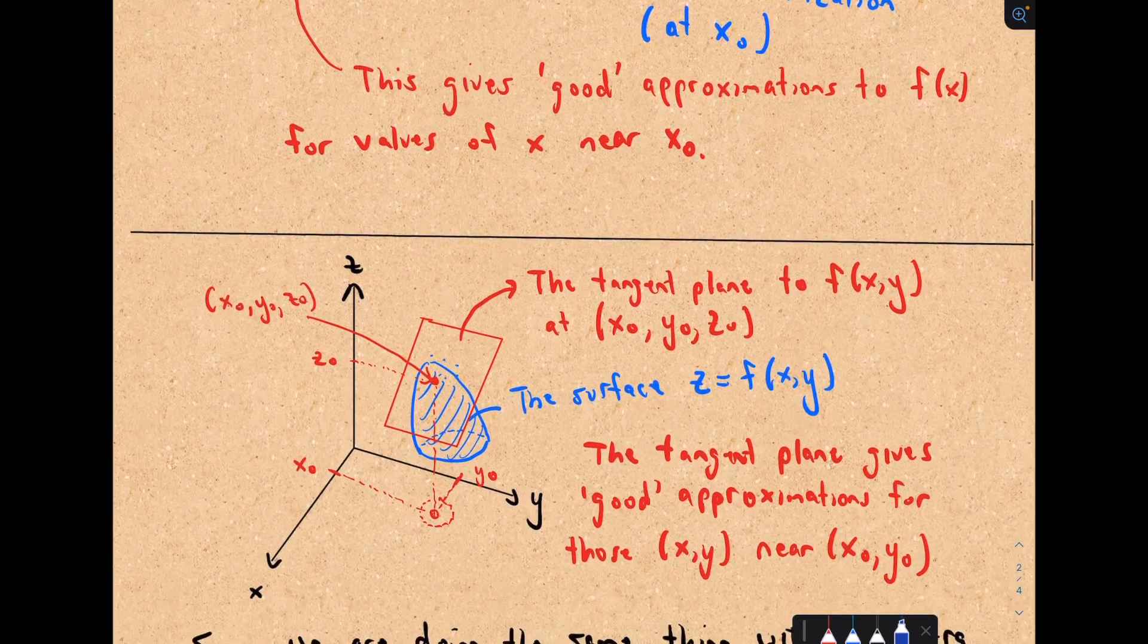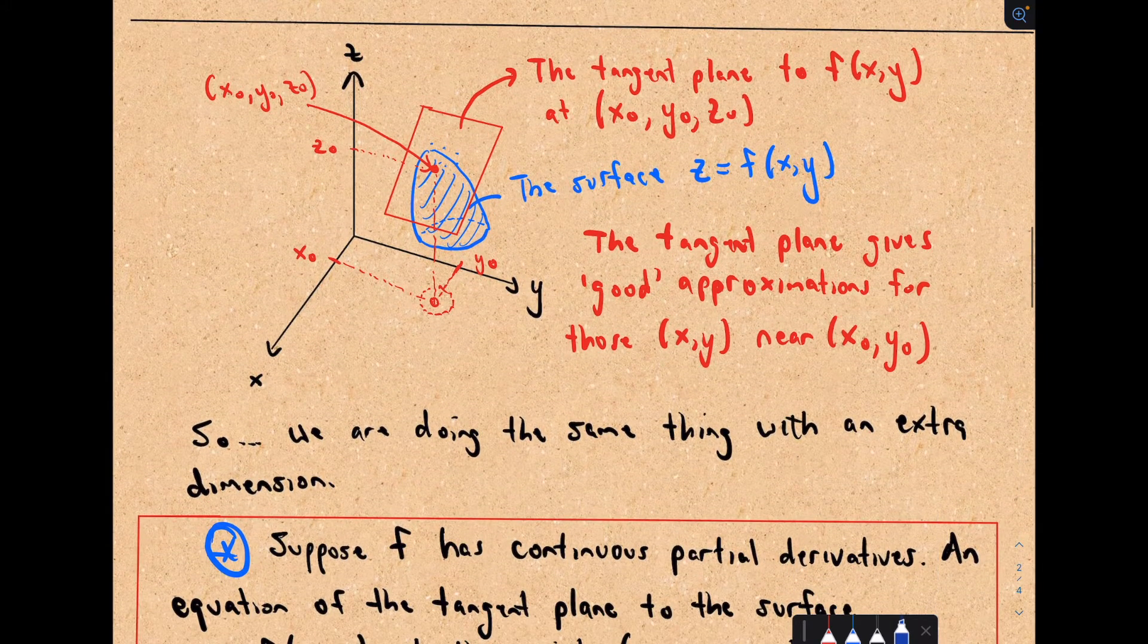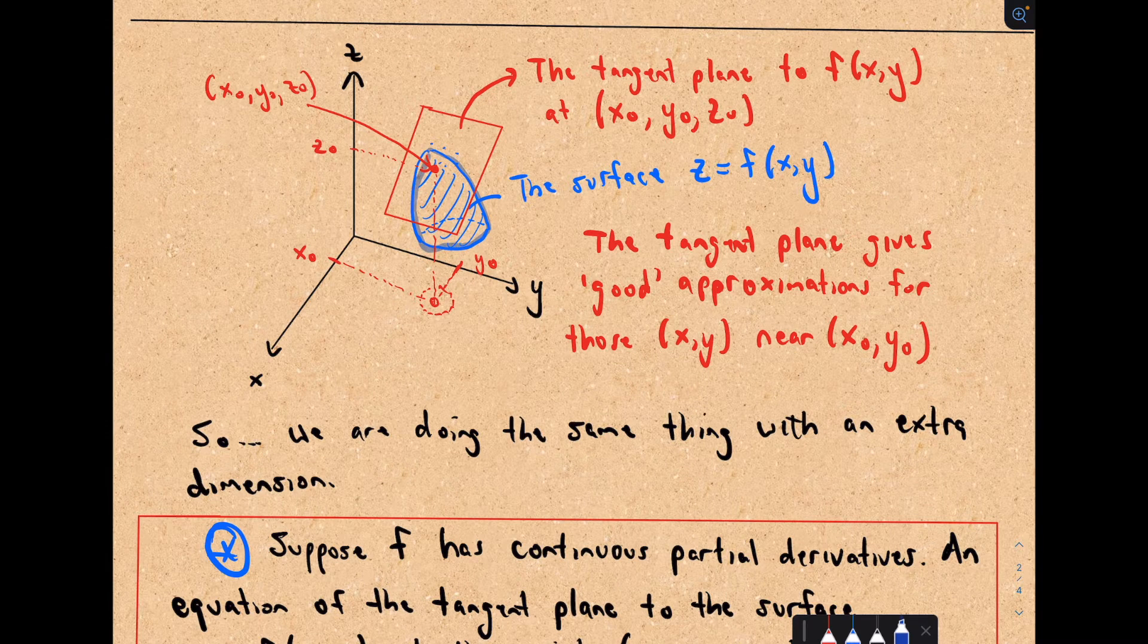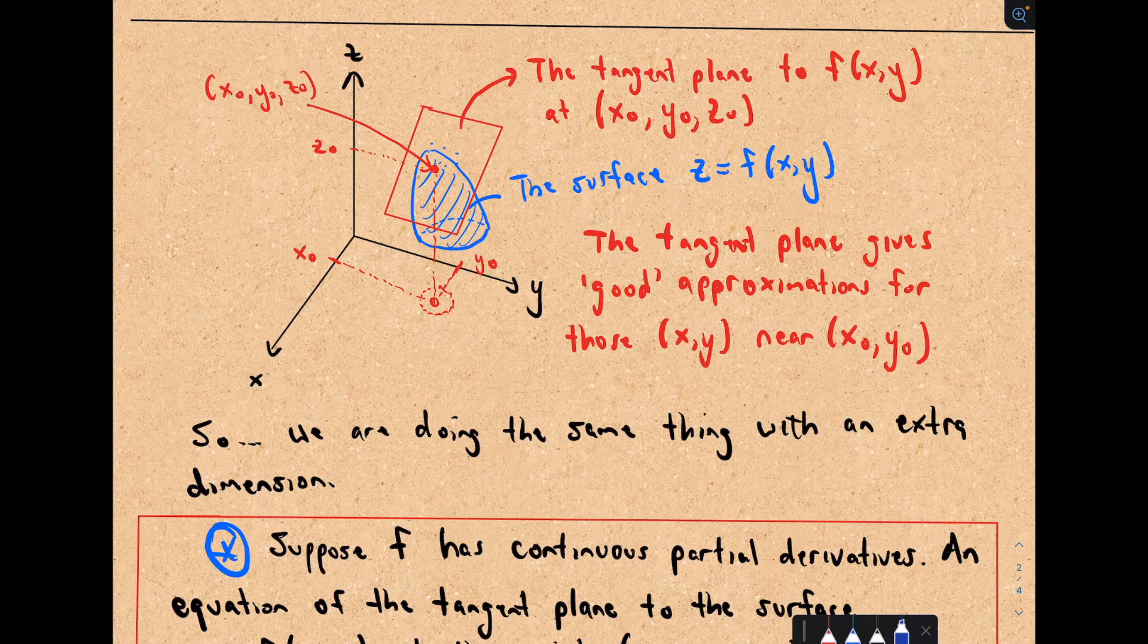So now we're doing, again, it's very analogous. Hopefully my picture here makes a little bit of sense. So I've got this surface here of our two independent variables, x and y.